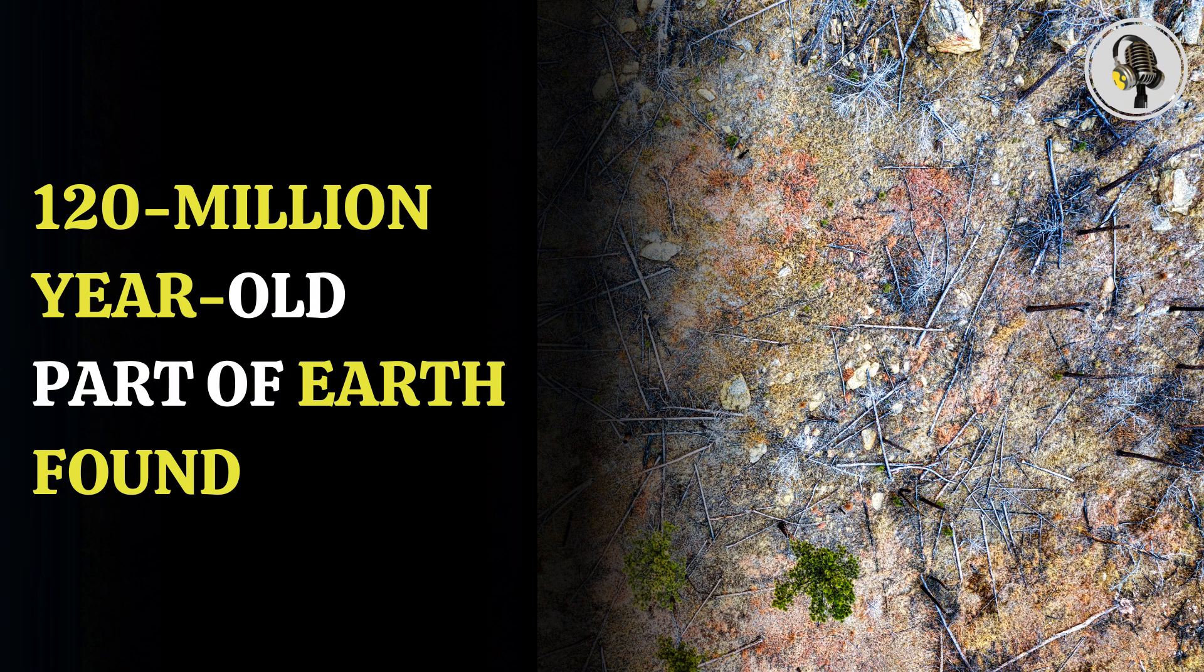Scientists have discovered a part of Earth 120 million years old in Borneo that has been thought to be lost for a long time. The existence of a tectonic plate named Pontus came to light after Susanna van der Lagermat, a graduate geologist at Utrecht University in the Netherlands, and her supervisor, Dawe van Hinsbergen, analyzed geological data from mountains in the Asia-Pacific region.